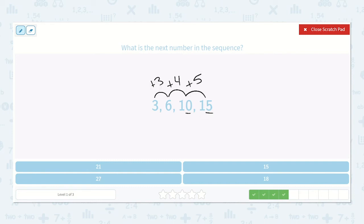Alright, so if it goes plus 3, plus 4, plus 5, I know the next one must be plus 6. So 15 plus 5 would be 20, so 15 plus 6 is 21. Alright, 21 is the next number in the sequence.